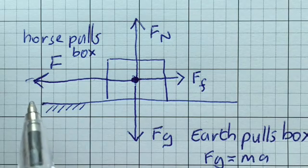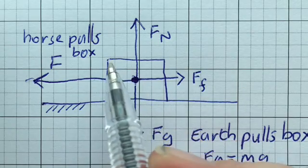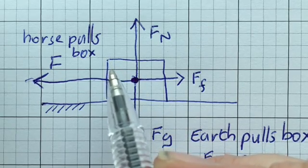That is a free body diagram - 'free' because I've simplified it and I'm not showing the environment, just the things acting on the box, the carriage. Thank you.